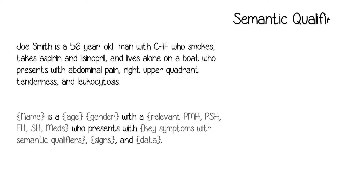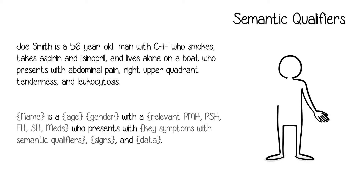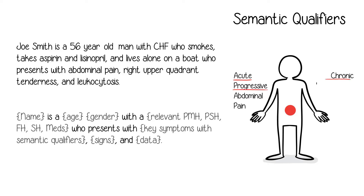Semantic qualifiers are adjectives that provide details about a given symptom and help qualify the meaning of the symptom. For example, acute progressive abdominal pain triggers a very different differential diagnosis than chronic intermittent abdominal pain. In general, it is useful to limit the inclusion of negative findings in the problem representation to ensure brevity. However, when a negative finding dramatically alters the differential diagnosis, such as afebrile, it should be included.